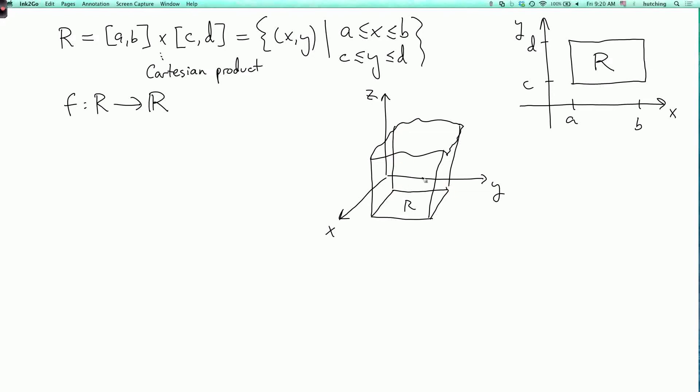And now we can look at the region in between the base and the surface. We can look at the volume of this region. So the idea is we're going to define the double integral over the region R of f dA to be the volume under the graph. At least when f is positive.